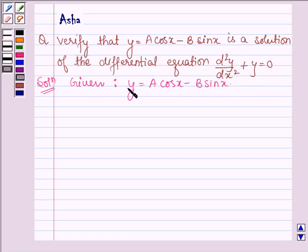So here we shall first find the second derivative of y, and then we shall add it to the given y and show that it is equal to 0.